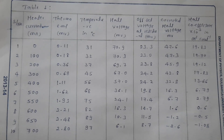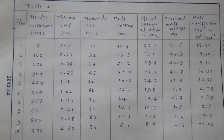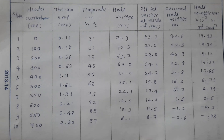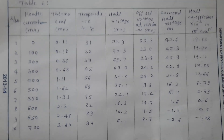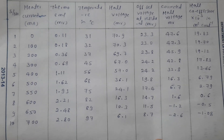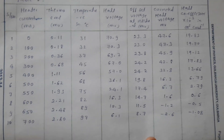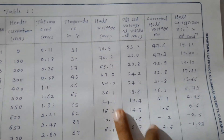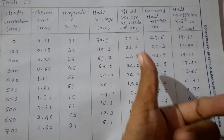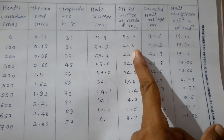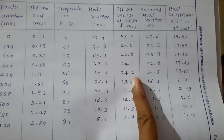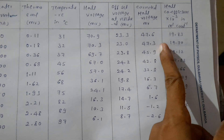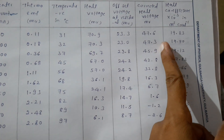Here is the tabular column. The first column is heater current in terms of milliampere. The second is thermo-EMF in terms of millivolt. Third is temperature in degree Celsius. Fourth is Hall voltage, which you have to note down. And the offset voltage, also called residual voltage, in terms of millivolt. Then the corrected Hall voltage.